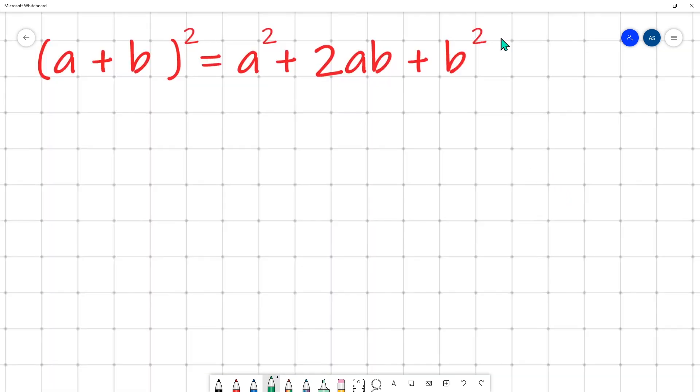First identity is a plus b whole square equals a square plus 2ab plus b square. Now let's see how we can use this to expand. For instance, if we have x plus 7 whole square, in this case x is a, so we take x square, then 2ab, and this equals to 7 square. Finally we have x square plus 14x plus 49. This is how we expand with the help of identity.